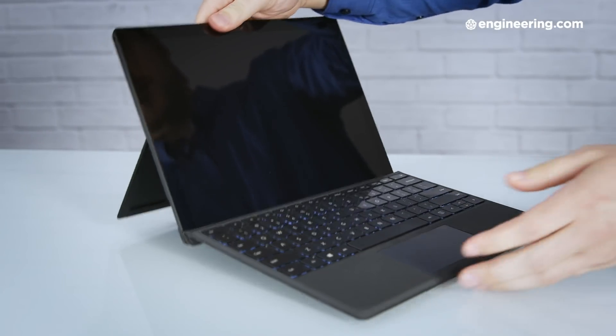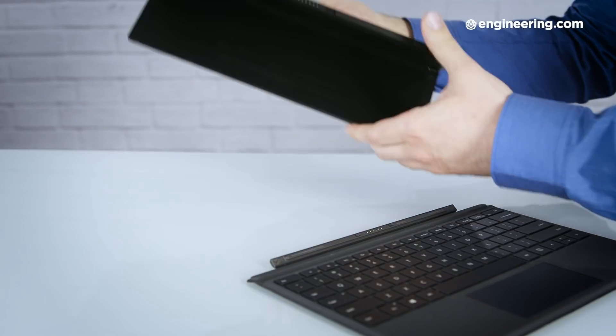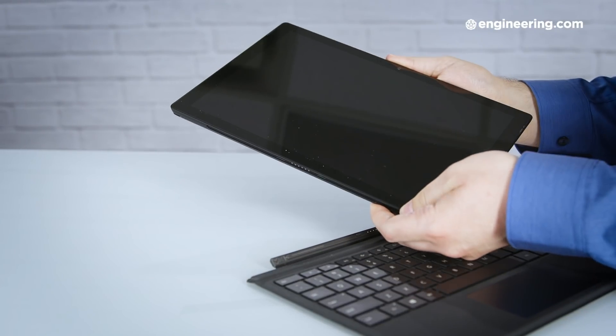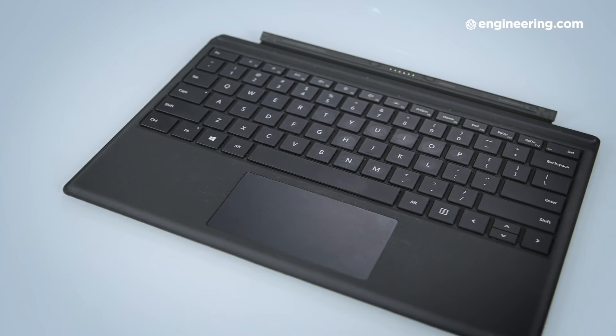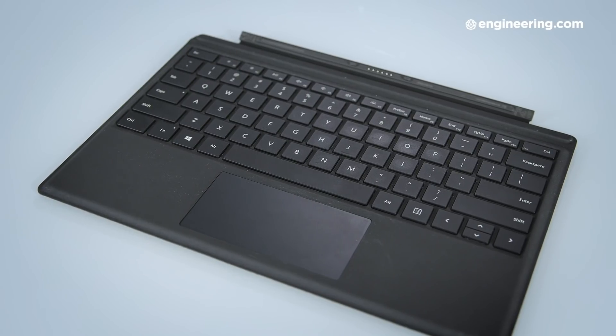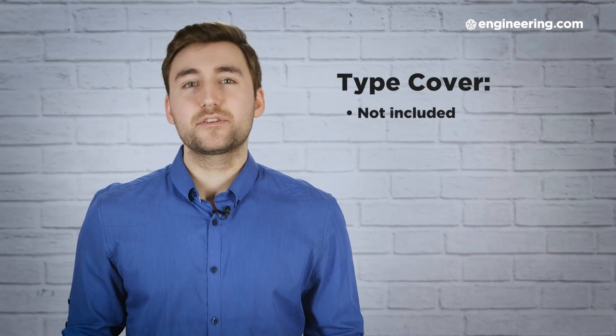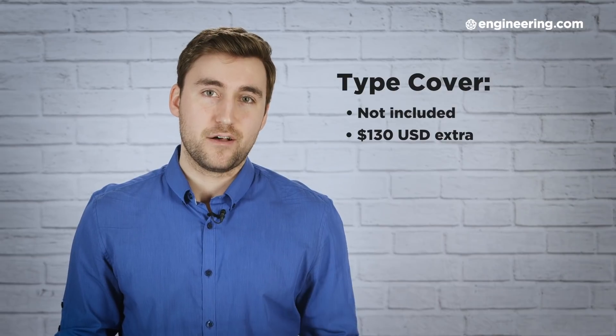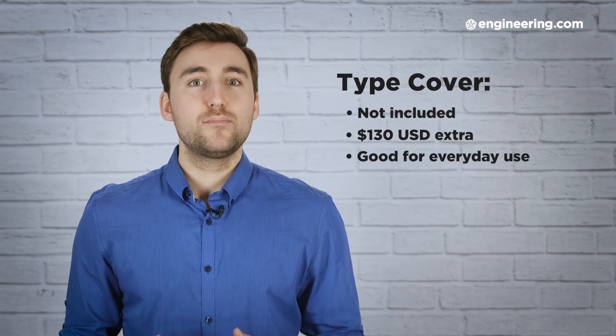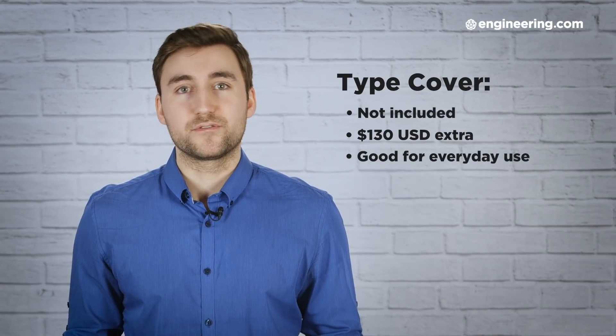The SP6 really is the ideal mix of laptop and tablet, but this is true only if you get the Type Cover keyboard. Without it, it's just a tablet, and you can get a better tablet. Ever since the Surface Pro 3, I've been frustrated that Microsoft doesn't include the keyboard in the box, because it's so critical to this device. But, alas, the Type Cover is going to cost you at least $130 on top of the computer itself. That said, the keyboard and trackpad are both quite comfortable for everyday use.